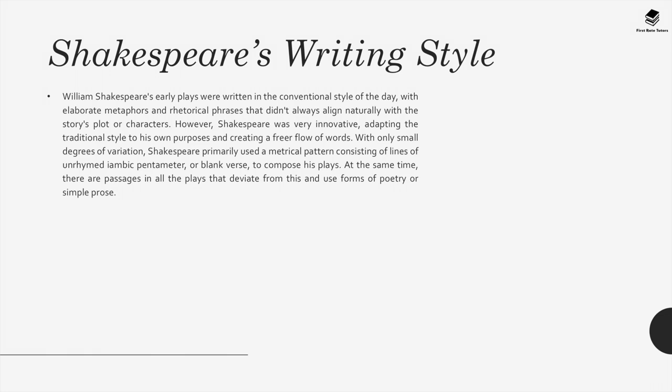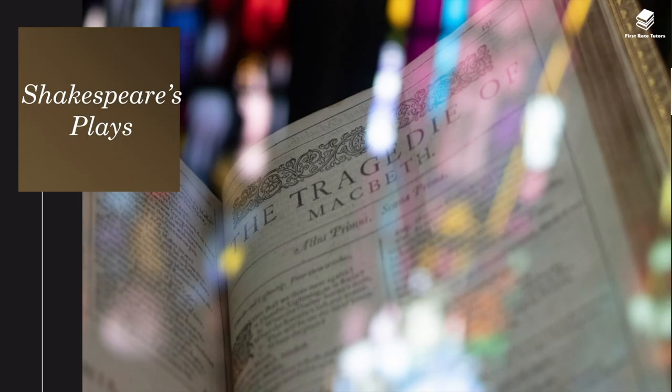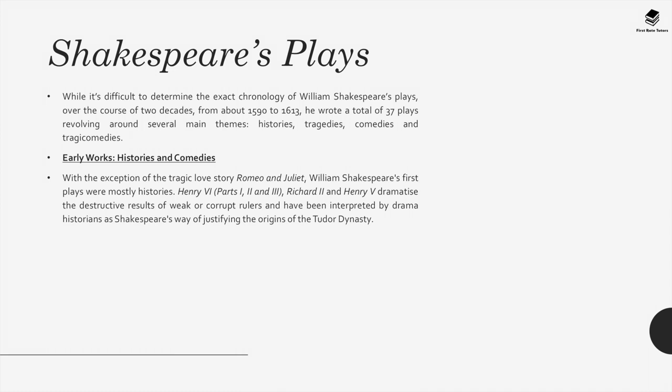Shakespeare's writing style: William Shakespeare's early plays were written in the conventional style of the day, with elaborate metaphors and rhetorical phrases that did not always align naturally with the story's plot or characters. However, Shakespeare was very innovative, adapting the traditional style to his own purposes and creating a freer flow of words. With only small degrees of variation, Shakespeare primarily used a metrical pattern consisting of lines of unrhymed iambic pentameter — blank verse — to compose his plays. At the same time, there are passages in all the plays that deviate from this and use forms of poetry or simple prose. Over the course of two decades, from about 1590 to 1613, he wrote a total of 37 plays revolving around several main themes: histories, tragedies, comedies, and tragic comedies.